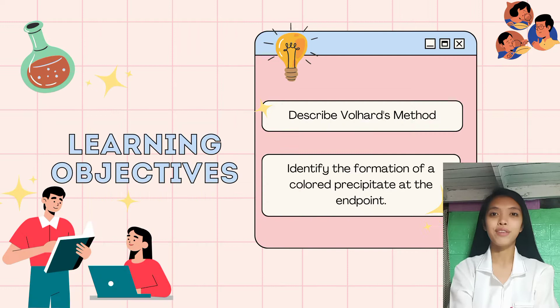First, describe the Volhard's Method, and then identify the formation of the colored precipitate at the endpoint.